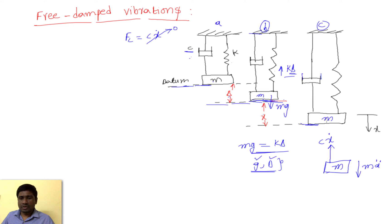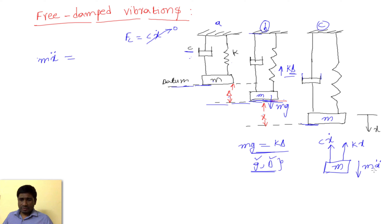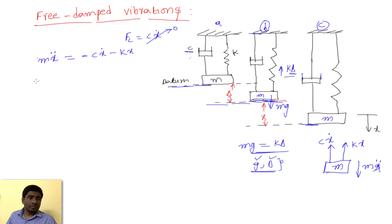The spring force is k·x. Applying Newton's law F = ma: mẍ equals the upward forces — negative c·ẋ minus k·x. Rearranging, the equation of motion becomes mẍ + cẋ + kx = 0. This is a second-order linear differential equation, exactly like the previous undamped case with the addition of the c·ẋ damping term.